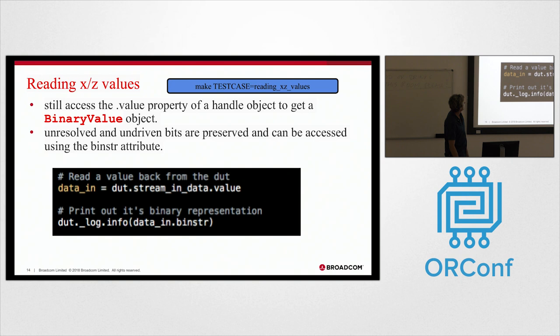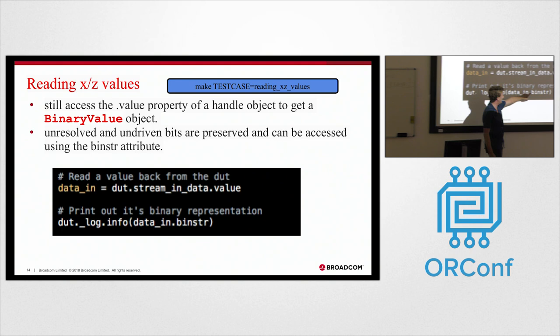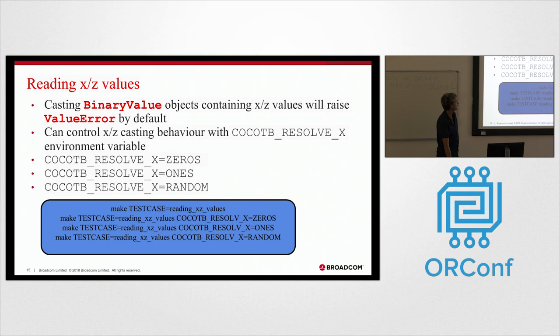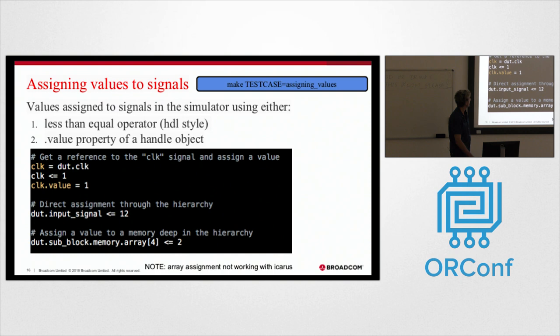So X and Z values - obviously Python has no idea what X and Z is, but binary value does. So all X and Z values are preserved when you read back a signal from the simulator. You can use this bin string to get the representation. That'll include X and Z values. What do you do if you try and cast a binary value object that has X and Z values? By default, you'll get a value error. Your simulation will stop, but you can control that through environment variables, so you can resolve Xs and Zs to zeros, ones, or random values.